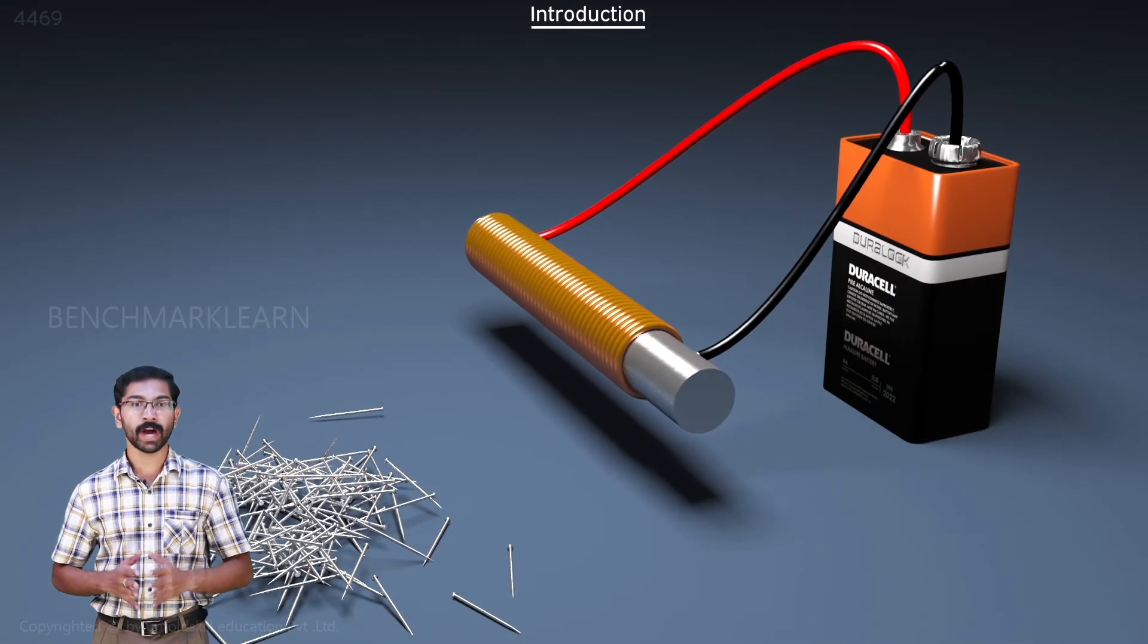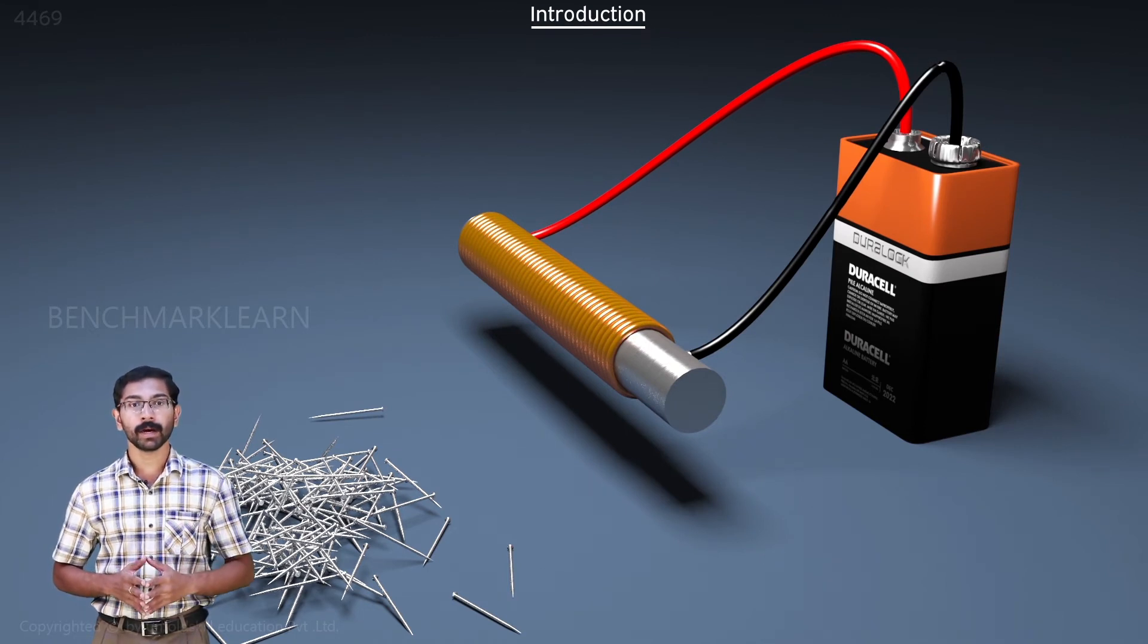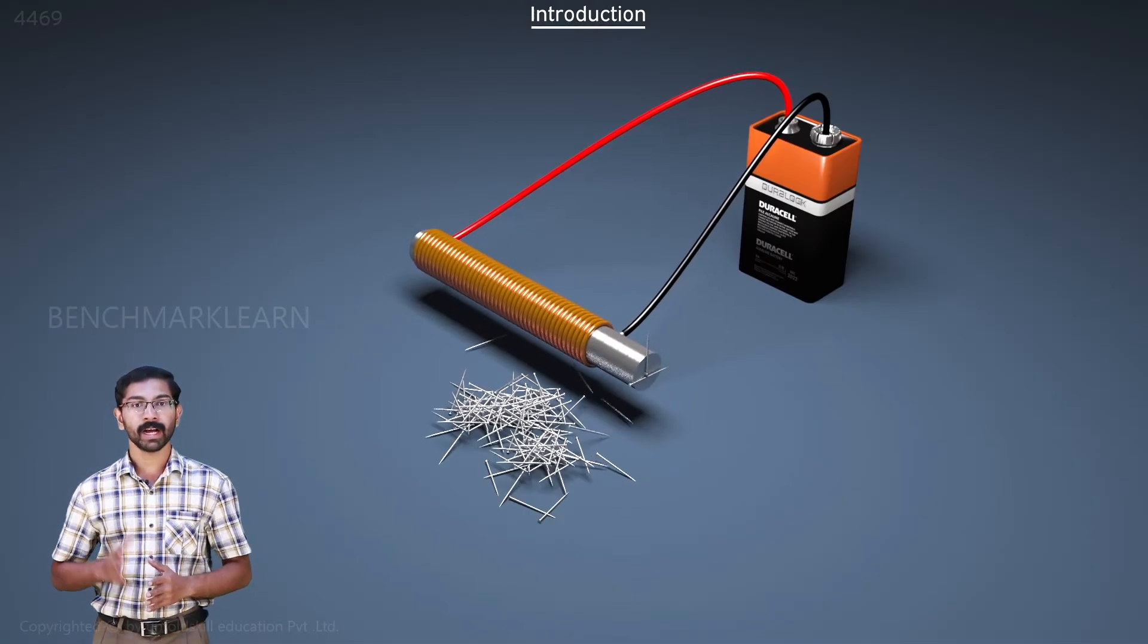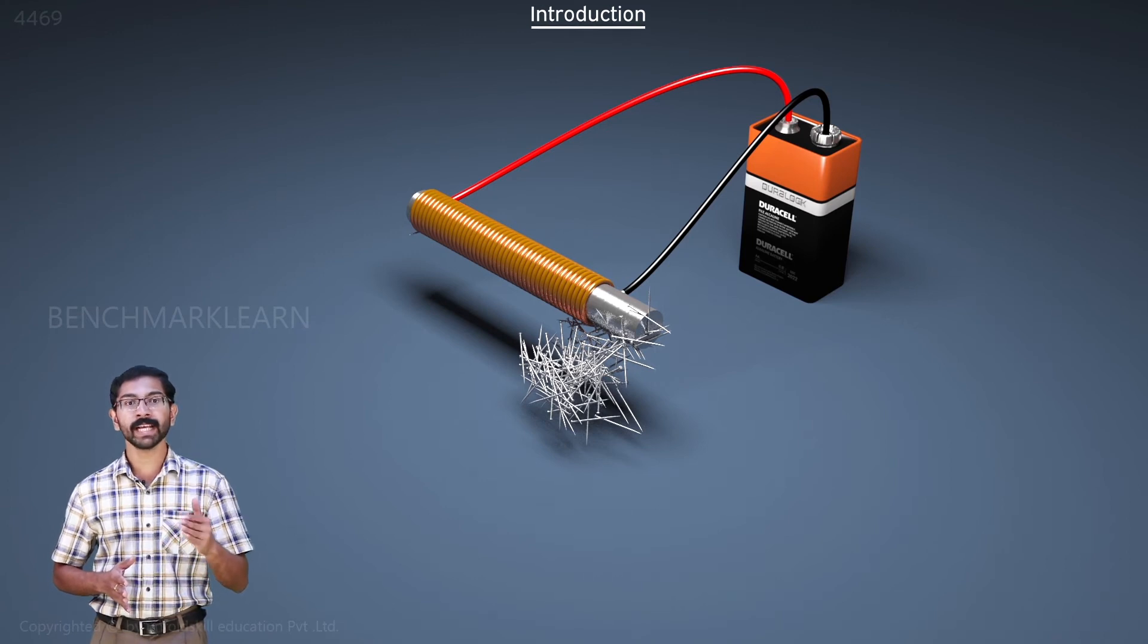Here, we have a piece of iron. Now, we wind some insulated wire around this iron piece. When we connect this setup to a battery, a current will flow through the wire, and the iron piece behaves like a magnet. It will attract magnetic materials near it.